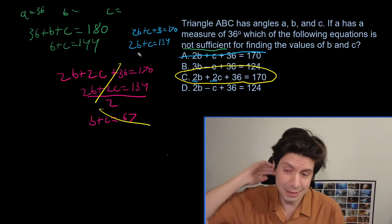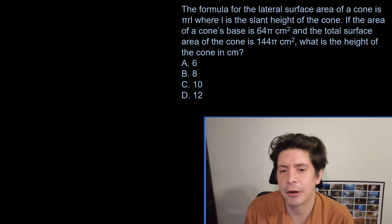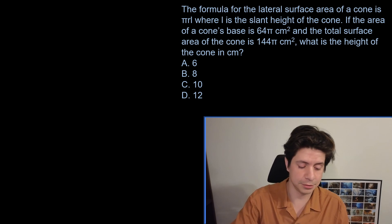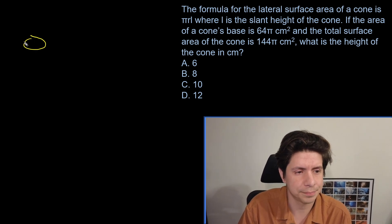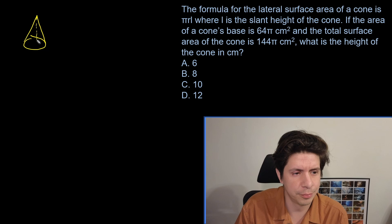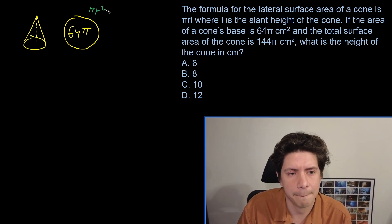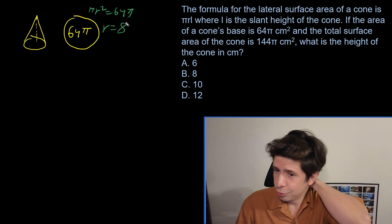This is a new question. I'm guessing it might be experimental this time, but in the future, I could definitely see it being for real. The formula for the lateral surface area of a cone is pi R L where L is the slant height of the cone. If the area of a cone's base is 64 pi centimeters squared and the total surface area of the cone is 144 pi centimeters squared, what is the height of the cone in centimeters? So I'm going to do a very quick drawing to sort of lay out what's going on. So we have this cone. We're looking for the height, which is perpendicular height, and we're told that the area of the circle is 64 pi. So I'm just going to find what I can find by doing pi R squared equals 64 pi. I'm going to get R equals eight.